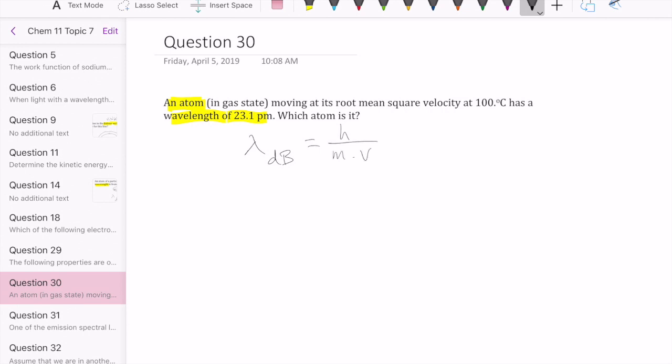Now the other related concept is root mean square velocity. So this is something we discussed when we were talking about gases. And in fact, the atom is in the gas phase. And you remember that the way we figure out the root mean square velocity or shortened as URMS is by taking the square root of three times the gas constant times temperature over the molar mass of that element.